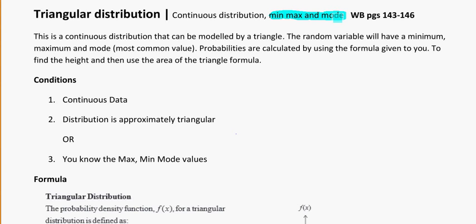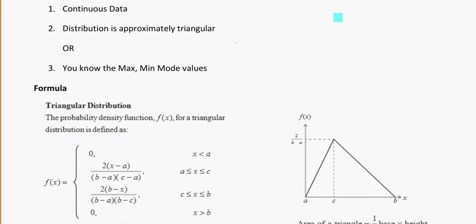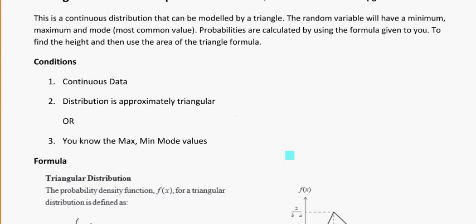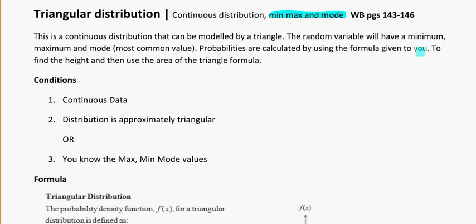So we have a bunch of formulas given to us on the formula sheet. It's all this scary-looking stuff down here. But you don't have to memorize that. It'll be given to you. And we use that to find the height. And then we use the area of the triangle formula. And remember, area of a triangle is one-half base times height. But that is also given to you.